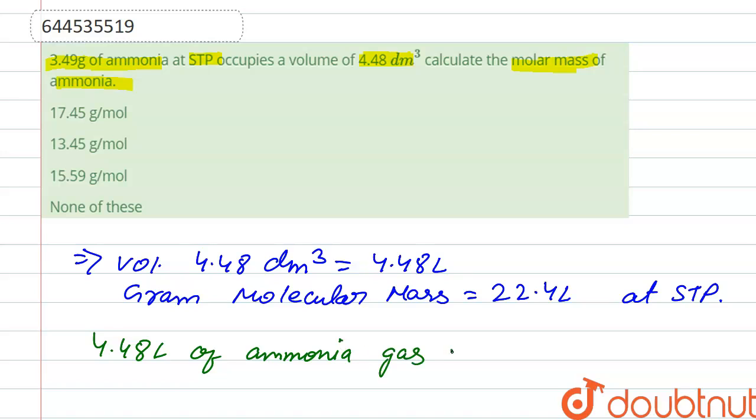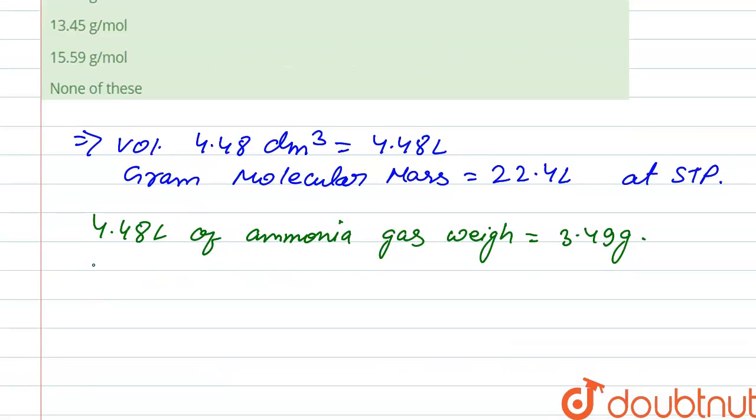22.4 liter of ammonia gas weighs 3.49 multiplied by 22.4 divided by 4.48.